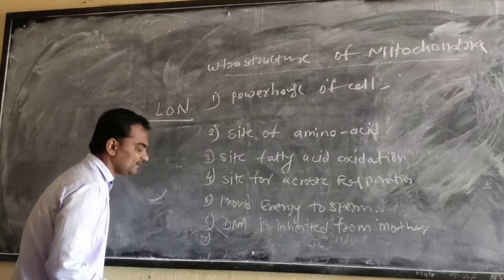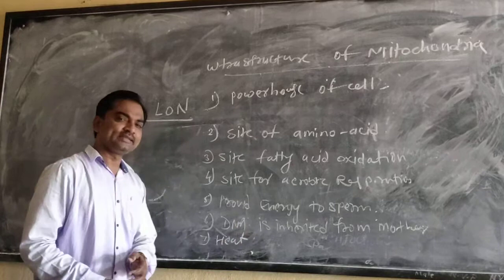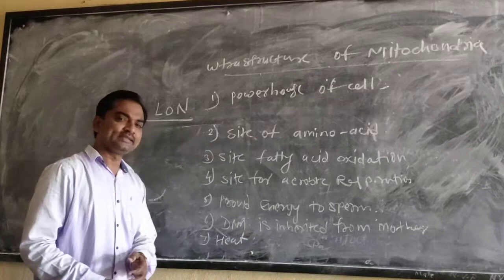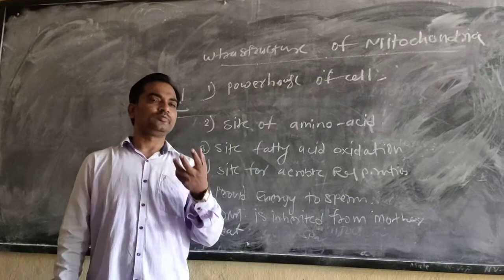The next function: mitochondria generate heat in organisms that live in polar regions. Polar organisms require heat, and that heat is produced inside the mitochondria.